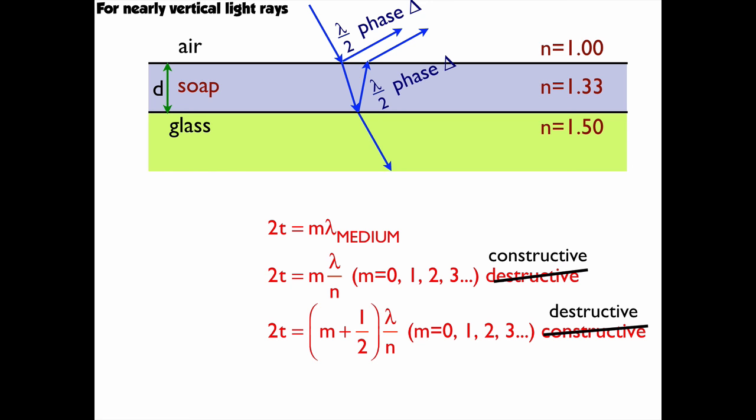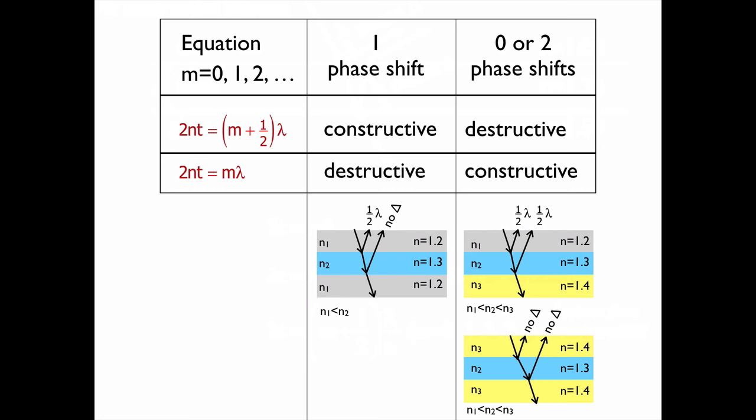So you've got to remember when things are changing. To help summarize what's going on, I've got this little table. I've got the equation, also in the standard form, the 2nt is equal to m plus a half lambda. With one phase shift, you can see it's constructive. The 2nt is m lambda, one phase shift destructive. And I've got a little picture down there to help you and show you kind of how it works with the phase shifts.